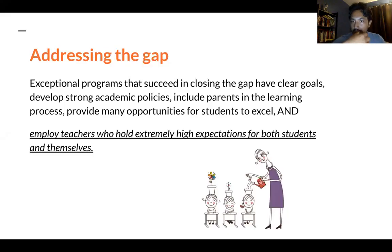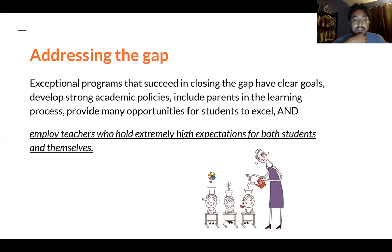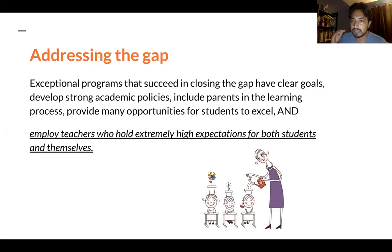So how do we address the gap? Exceptional programs that succeed in closing the gap have clear goals, develop strong academic policies, include parents in the learning process, provide many opportunities for students to excel, and employ teachers who hold extremely high expectations for both students and themselves. Ultimately, this comes down to understanding diversity so we don't create biases or approach teaching in a linear way that defaults to the standards of the white middle class, which historically is what America has based itself on.